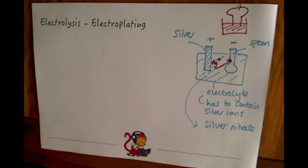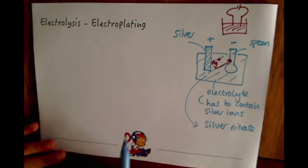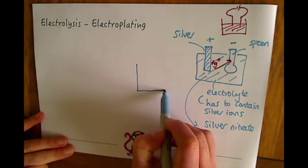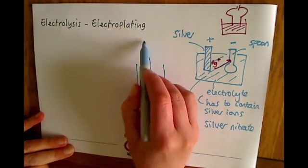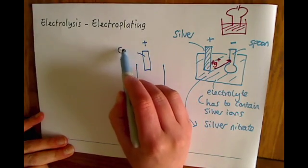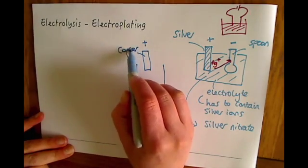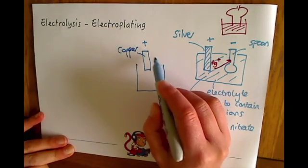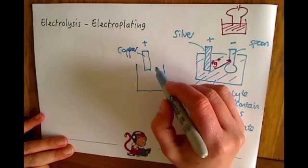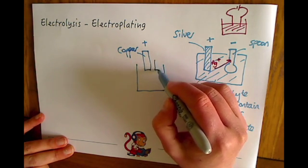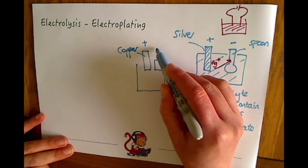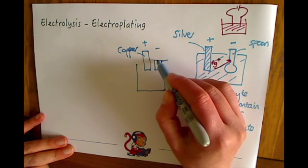Similarly you could do the same thing with something that you wanted to coat in copper. So you'd have your piece of copper as your positive electrode and you would have let's say for example it could be a metal pan for example that you'd want to coat in copper and that could be your negative electrode.